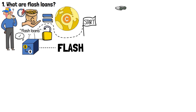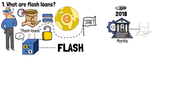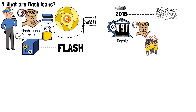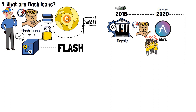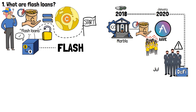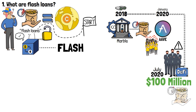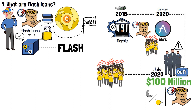The history of flash loans traces back to 2018, when an open-source bank, Marble, introduced such a feature. Despite this launch, flash loans started gaining popularity only after a few years. The renewed interest was led by the decentralized lending platform Aave, which introduced this feature in January of 2020. It didn't take long for flash loans to gain attention from decentralized finance investors. In July of 2020, Aave was already issuing around $100 million in flash loans on a daily basis, and as the year went by, the interest only grew larger.